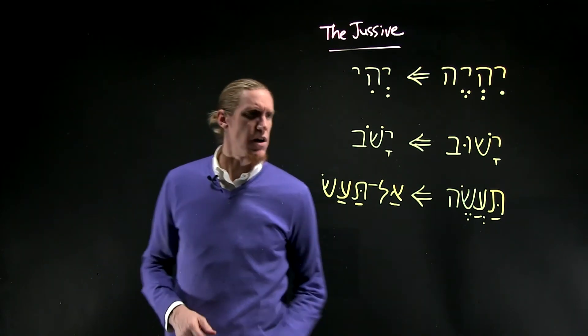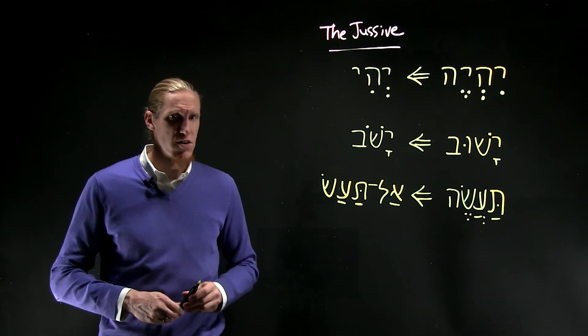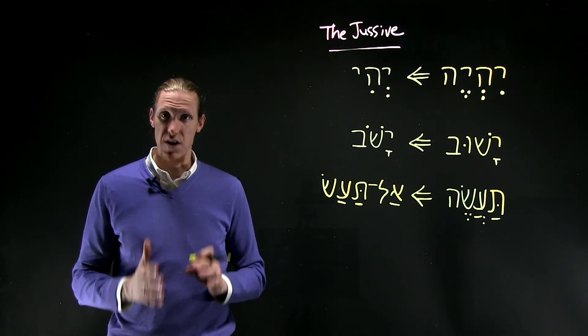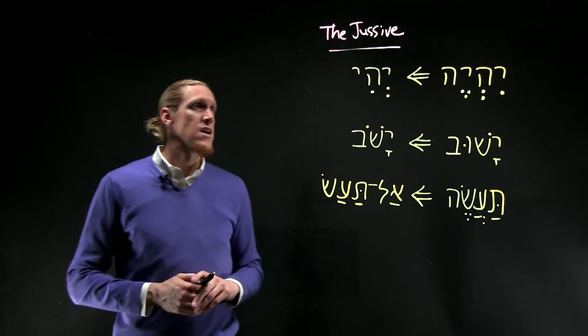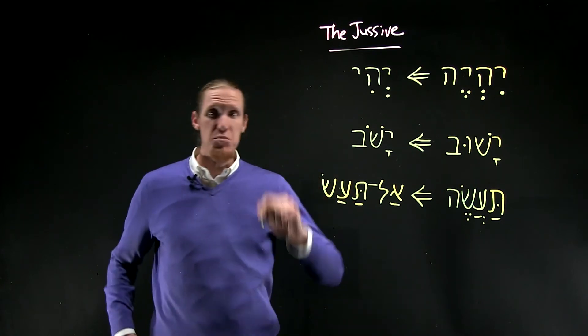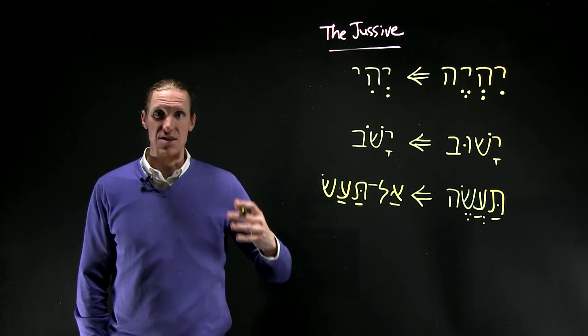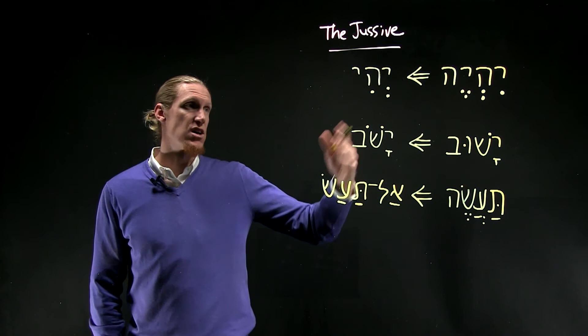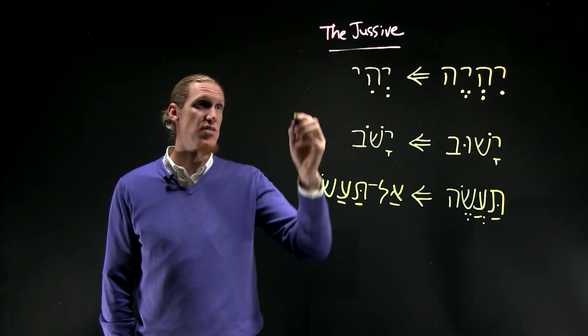Now, another sort of peculiar example of the jussive in the creation story and elsewhere is when you have a simple conjunction attached to the beginning of a jussive like yehi that starts with a sheva.